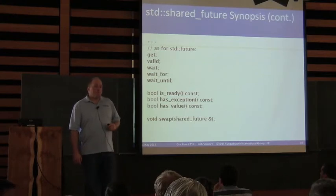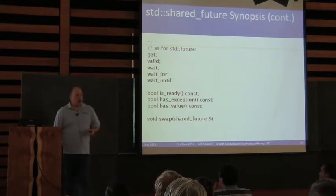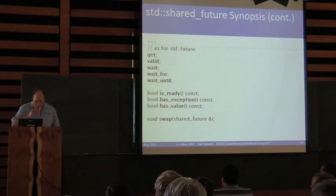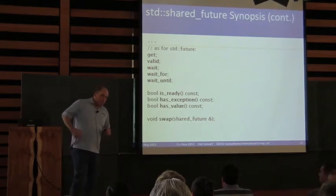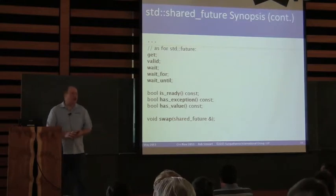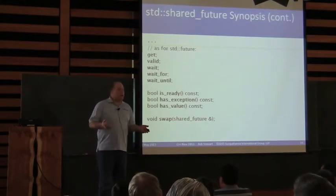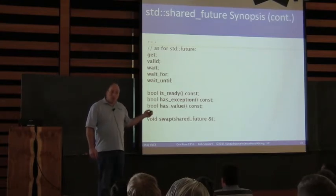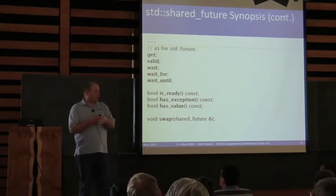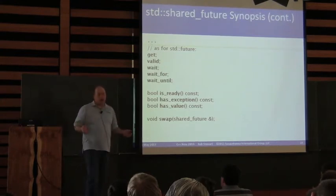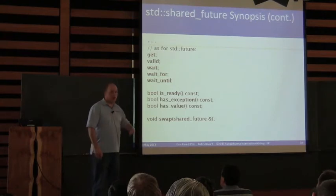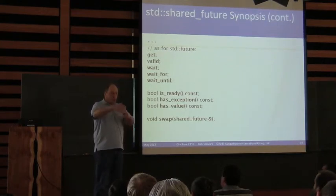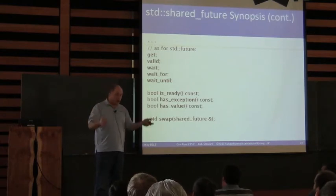When would you use shared_future versus simple future? The answer is when you need multiple threads to potentially have access. Why would you use the simpler one rather than shared_future given it has more functionality? If only one thread ever needs the result, there's no need for shared_future. If you want is_ready, has_exception, or has_value, the only way to get those is through shared_future. Consider an example like recalculating a spreadsheet — one cell references the value from another, and another references the value from another. You could use shared_future in each place where you need the value from a single cell, and once it's finished calculating, all those dependent ones can get the value and do their own computations.